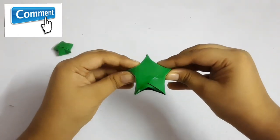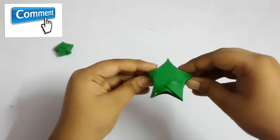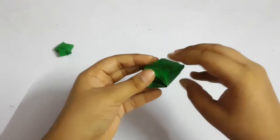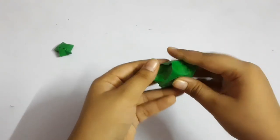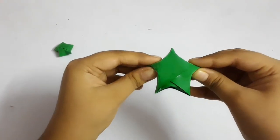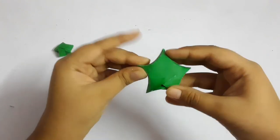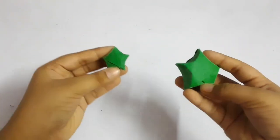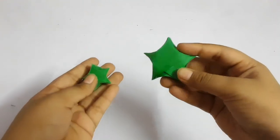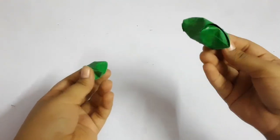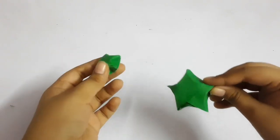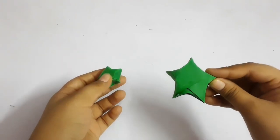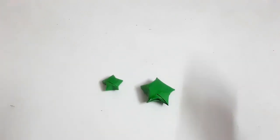So this is a big one. We can also use this as a decoration. We can put a thread and use cello tape to stick it. This is a big one and this is a small one. Now you can make very small or very big, more big than this. Same steps you have to follow, just the length and breadth of the paper will increase. So we have made it, thank you and bye.